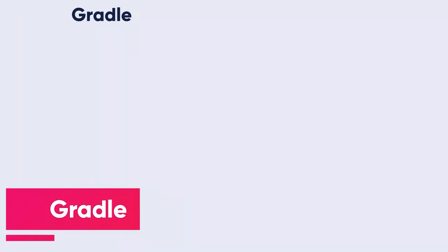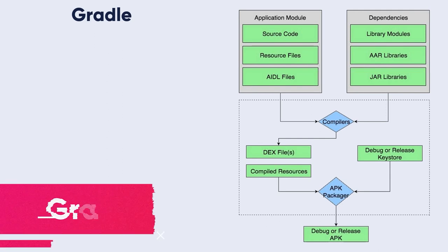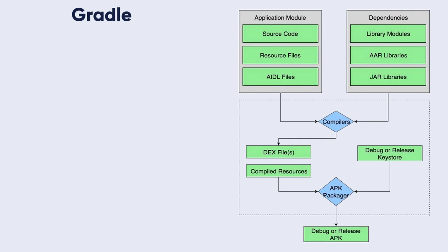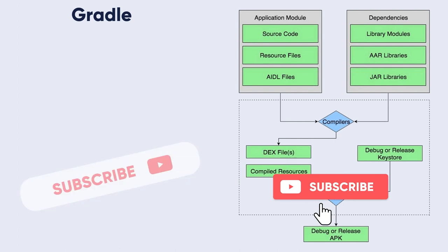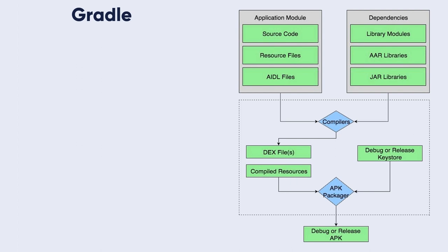Let's talk about the Gradle Android build system. Gradle compiles app resources and source code and packages them into APKs or Android App Bundles that you can test, deploy, sign, and distribute. Android Studio uses Gradle, an advanced build toolkit, to automate and manage the build process while allowing you to define flexible custom build configurations.